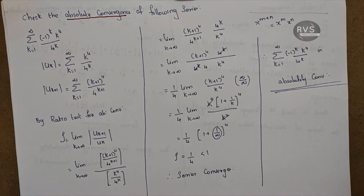If you have questions about this method — limit comparison, ratio test, root test — you need to apply these. If you see a plus-or-minus symbol like minus 1 raised to k, give it absolute value symbols. Then apply the ratio test or root test to check absolute convergence.